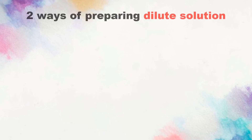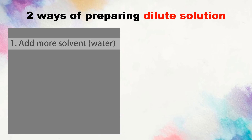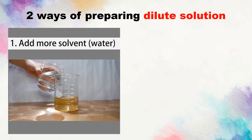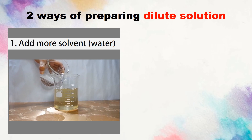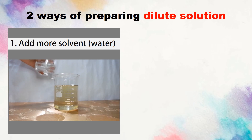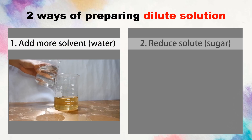So again, the two ways of preparing a dilute solution are: by adding more solvent or water, and by reducing the amount of solute or sugar.